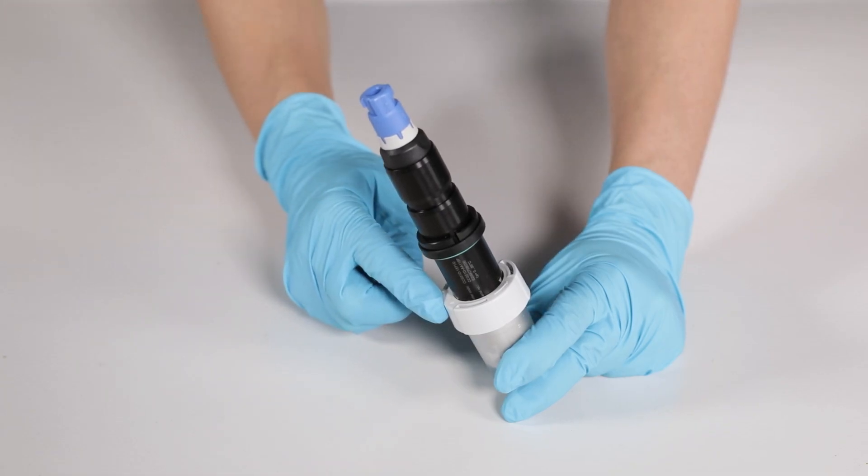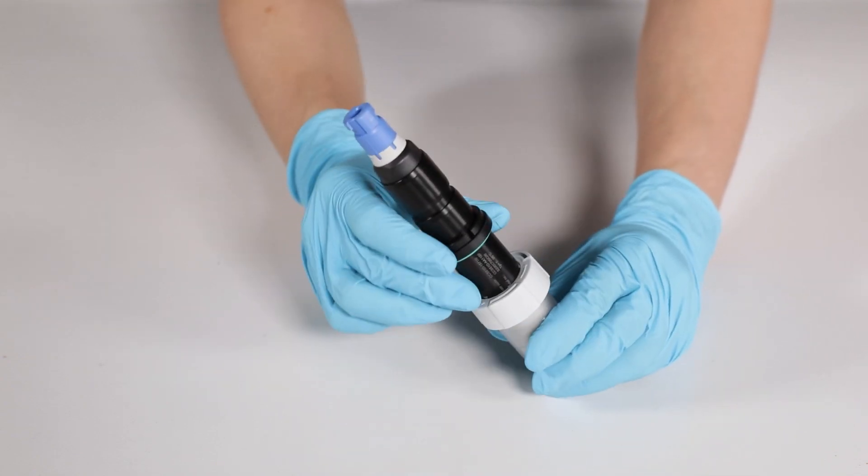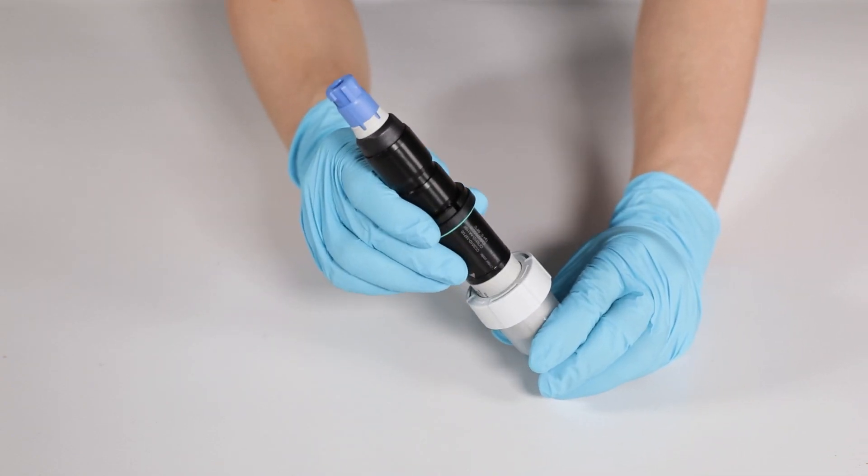First open the top part of the protection cap by turning it counterclockwise. After that carefully remove the protection cap from the sensor. Don't remove the sensor from the protection cap without opening the top part first. This could damage the sensor membrane.